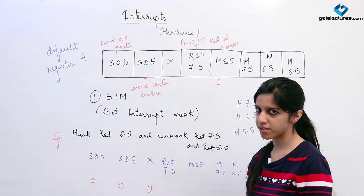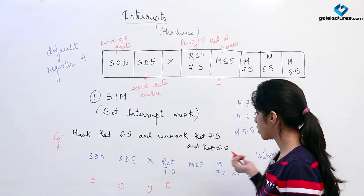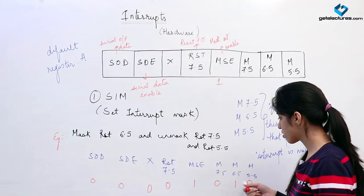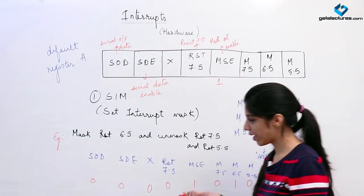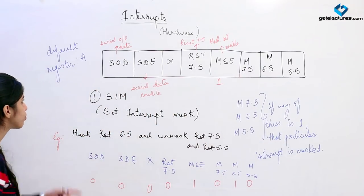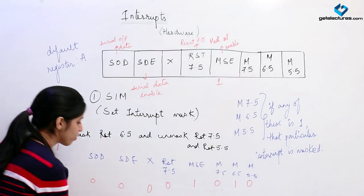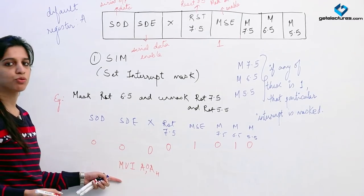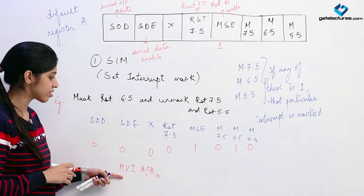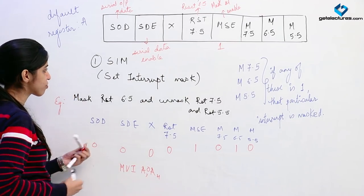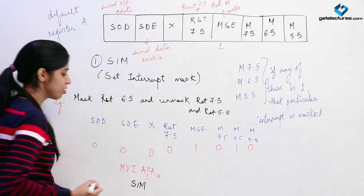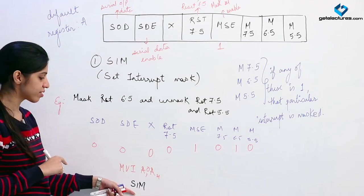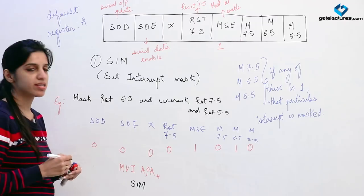This gives us the binary pattern: 0 0 0 0 1 0 1 0, which is 0AH in hexadecimal. So the instruction sequence is: MVI A, 0AH followed by SIM. MVI A loads the accumulator with 0AH, and the SIM instruction then masks RST 6.5 as required.